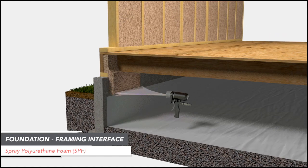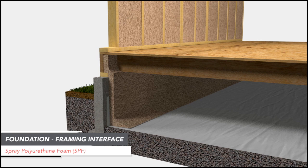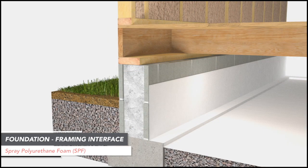SPF can be extended down the inside of the foundation wall to create a conditioned basement or crawl space. When closed-cell SPF is used, it can provide a code-compliant vapor retarder as well as a FEMA-approved water-resistant insulation required in flood-prone areas. Conditioned basements and crawl spaces result in more energy-efficient buildings when HVAC and ductwork are in the basement or crawl space, by bringing this equipment into the conditioned space of the building.